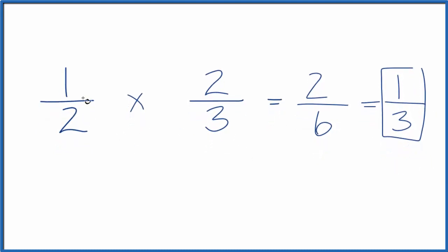We can check this with our calculator. 1 divided by 2, that's 0.5 times 2 divided by 3 is 0.6. And that 6 keeps repeating. Just put a bar over there.